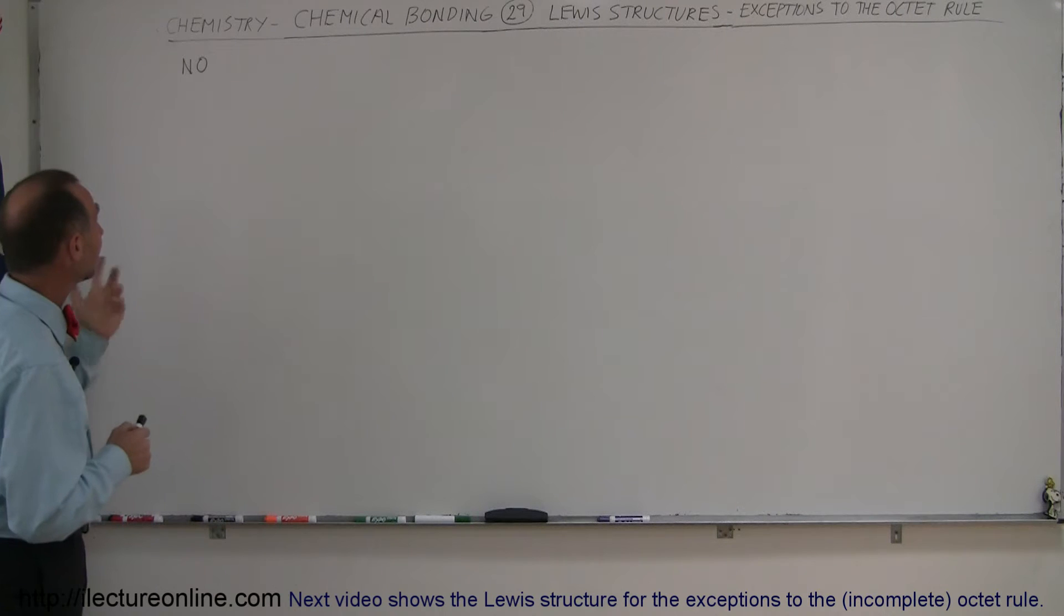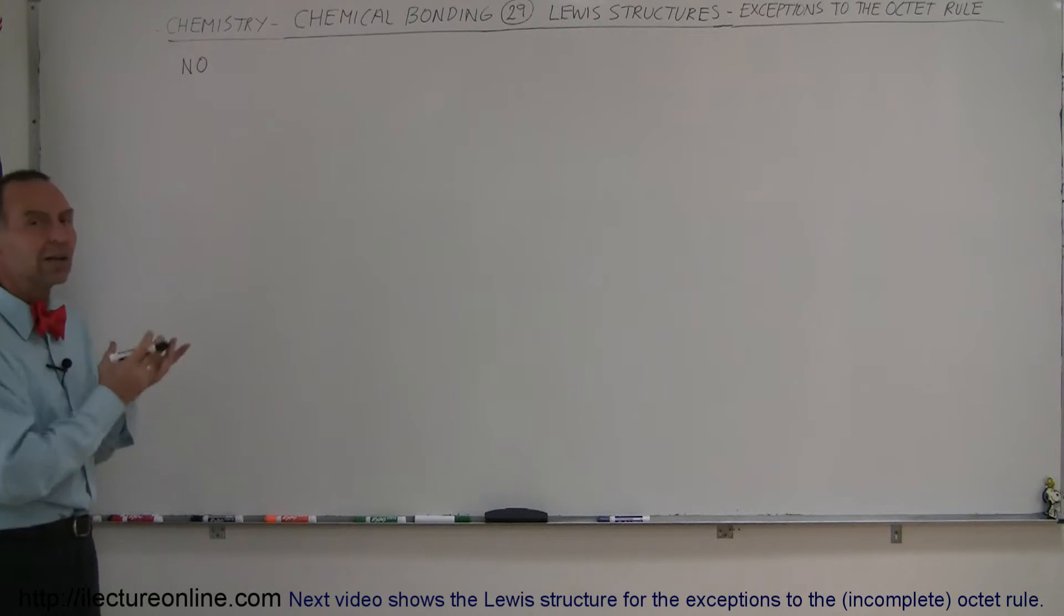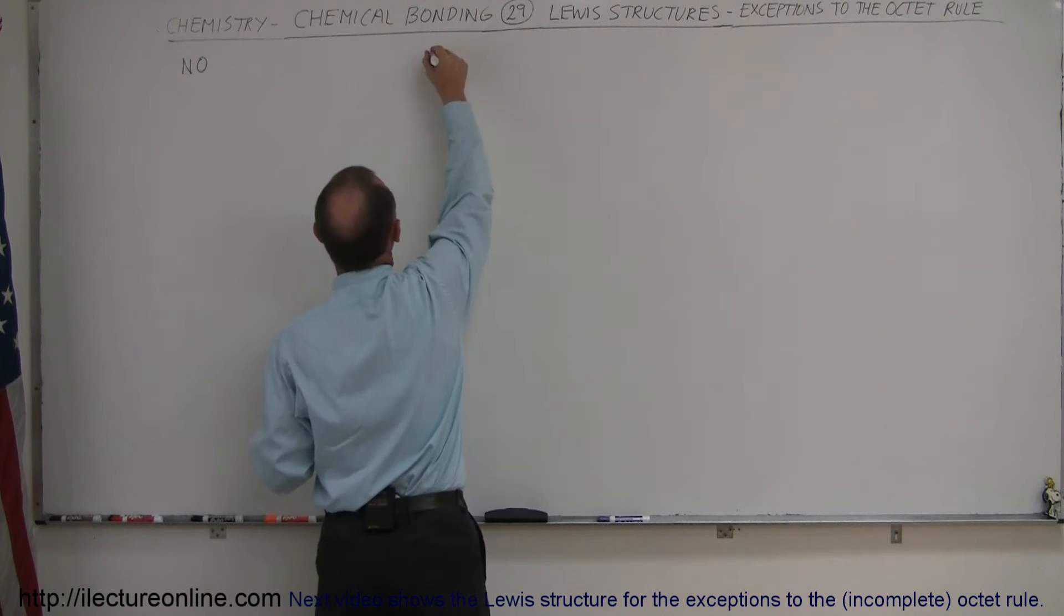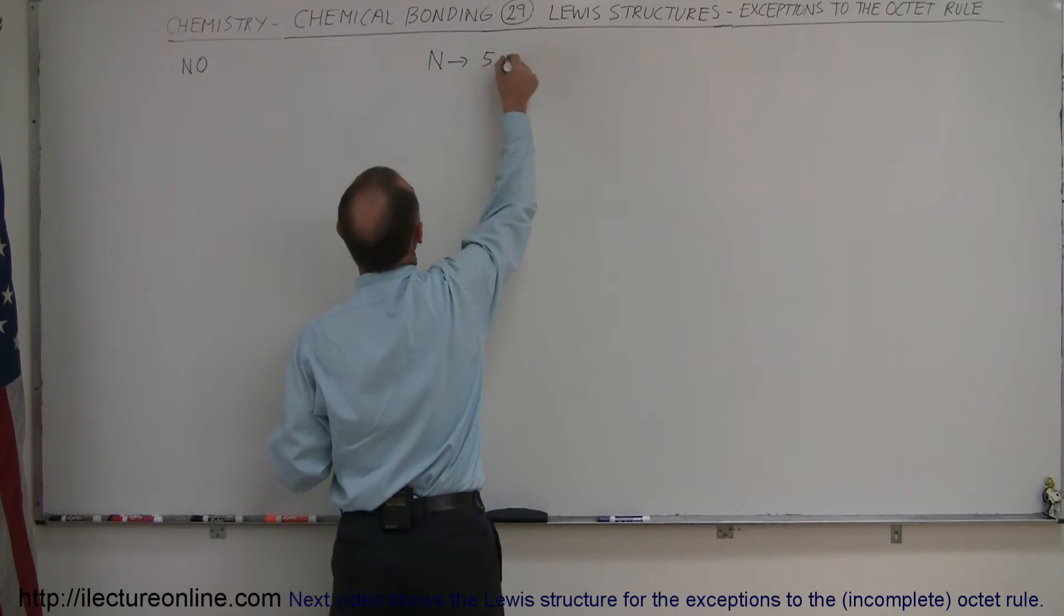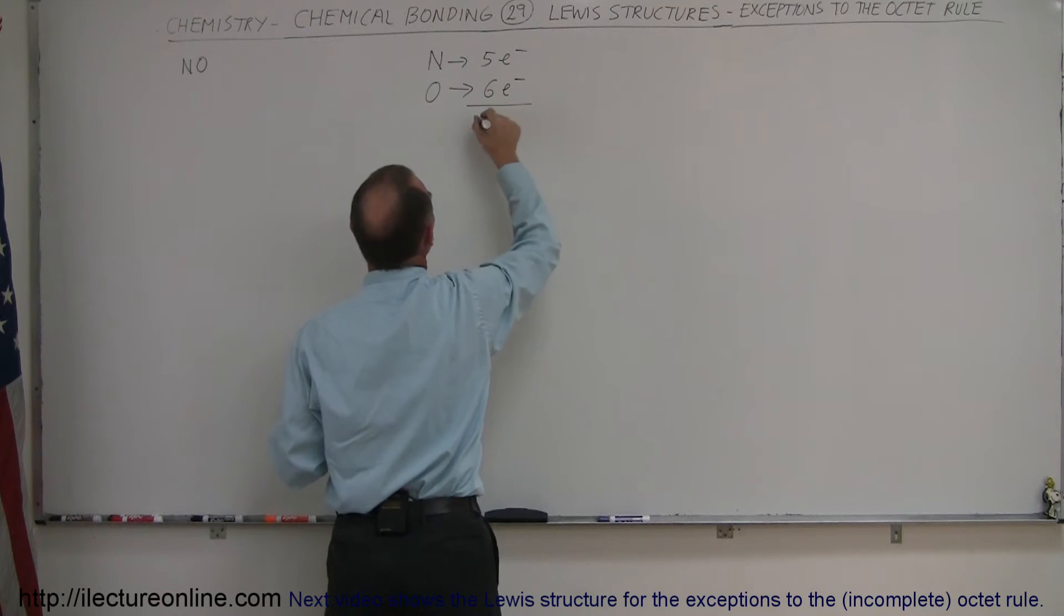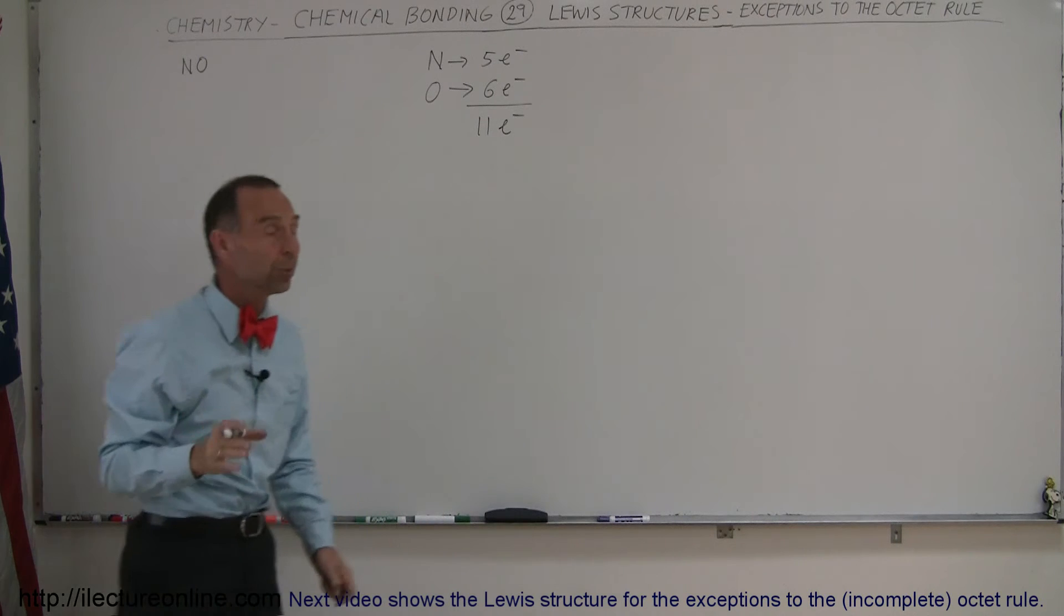So take a look at this molecule nitrous oxide. Yes it is a molecule and for what will be a very obvious reason you cannot satisfy the octet rule and see just a moment why that is. For example, nitrogen has of course five valence electrons and oxygen has six valence electrons. This gives us a total of eleven electrons which is an odd number.